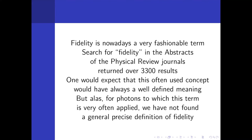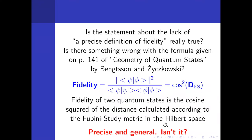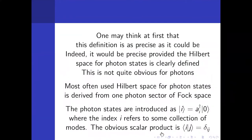But for photons, to which this term is very often applied, we have not found a precise good definition of fidelity. There is a statement which defines fidelity very well, taken from the book by Bengtsson and Zuchkowsky on page 141. It says fidelity of two quantum states is the cosine squared of the distance calculated according to the Fubini study metric in the Hilbert space. This sounds very precise. However, when we look closer at it, it's not so simple.